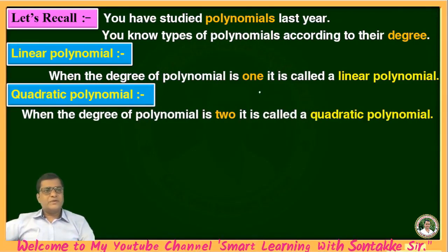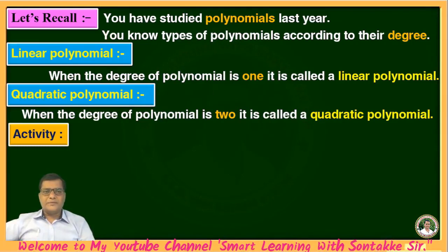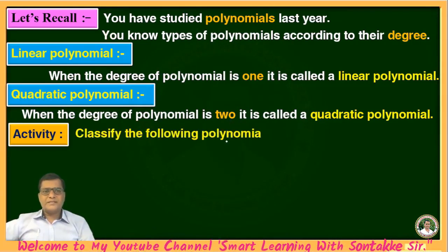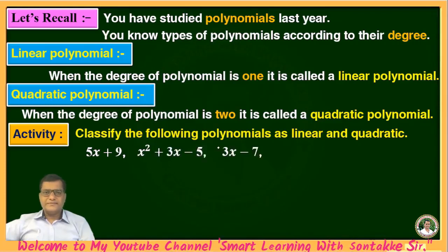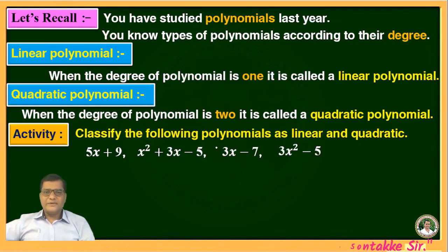Just for a revision, we will see one activity on Linear Polynomial and Quadratic Polynomial. The example is: classify the following polynomials as Linear or Quadratic. The given polynomials are: 5x + 9, x² + 3x − 5, 3x − 7, 3x² − 5x, and 5x². From these, which is a Linear Polynomial and which is a Quadratic Polynomial?